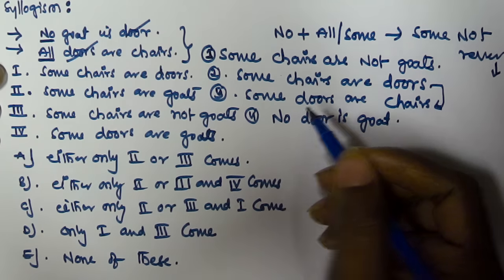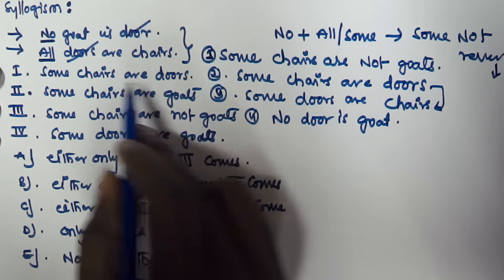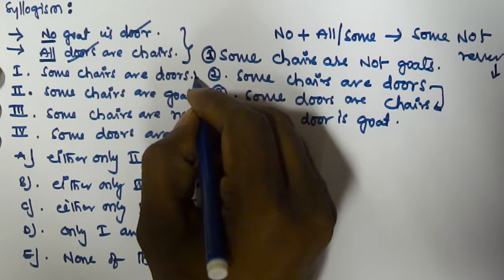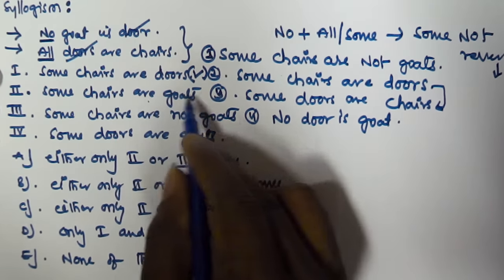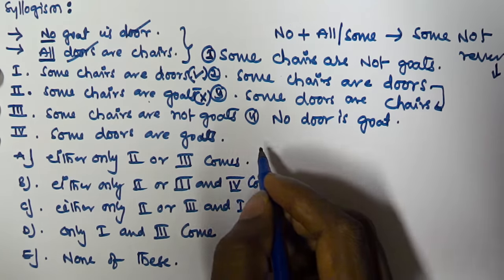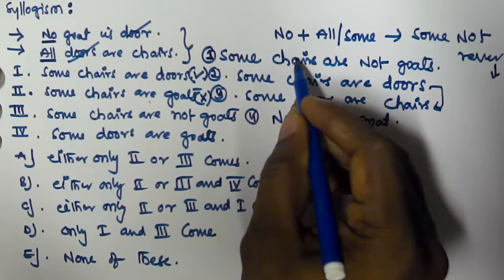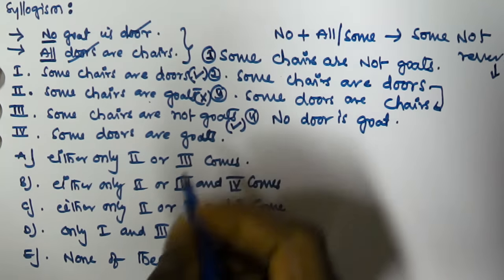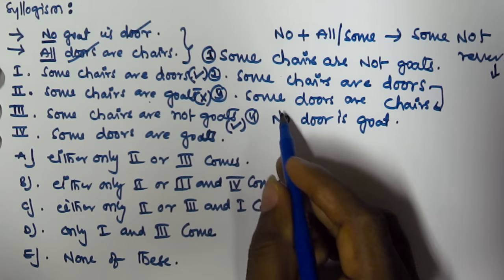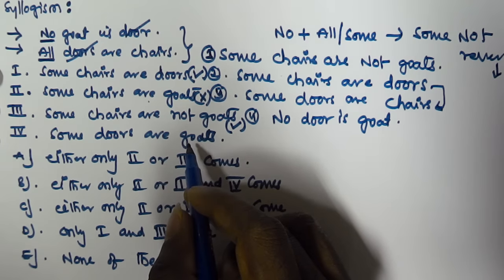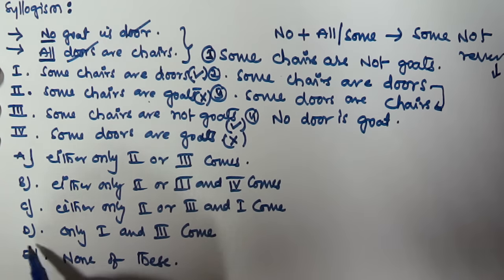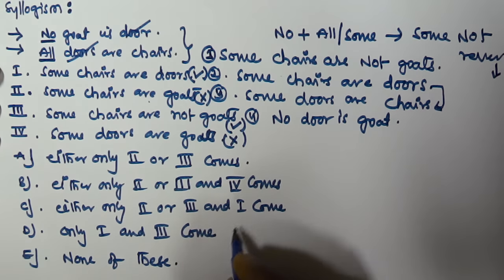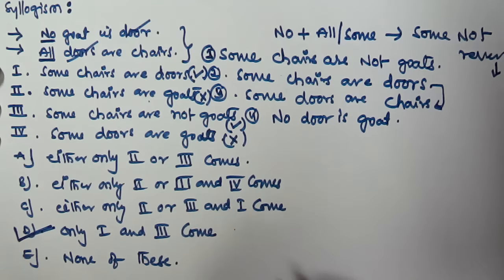Now matching conclusions to derivations: conclusion 1 (some chairs are doors) matches our second derivation — true. Conclusion 2 (some chairs are goats) does not match; we derived 'some chairs are not goats' — false. Conclusion 3 (some chairs are not goats) matches the first derivation — true. Conclusion 4 (some doors are goats) has no derived relationship — false. So only the first and third conclusions are true, meaning option D is the right answer.